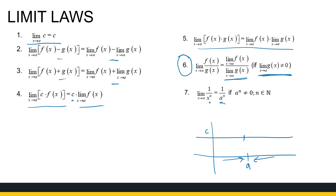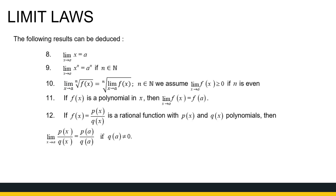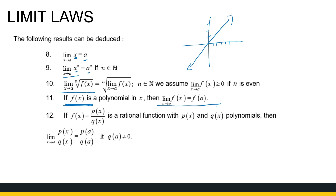Those are the basic limit laws. From here we can deduce more laws. The limit as x approaches a of x — the identity function — is just a. The limit as x approaches a of xⁿ is just aⁿ. The limit of the root of a function is the root of the limit. Now, if I've got a polynomial, since a polynomial is defined on all real numbers, the limit as x approaches a of f(x) is just f(a) — we can simply substitute. Similarly for a rational function, we can substitute in provided the denominator is non-zero.